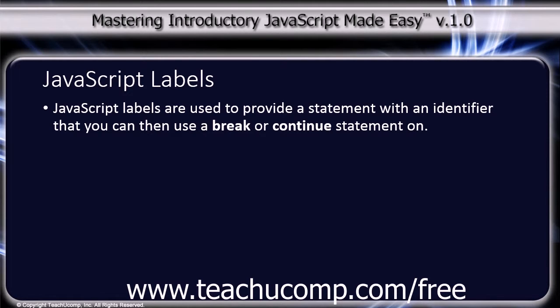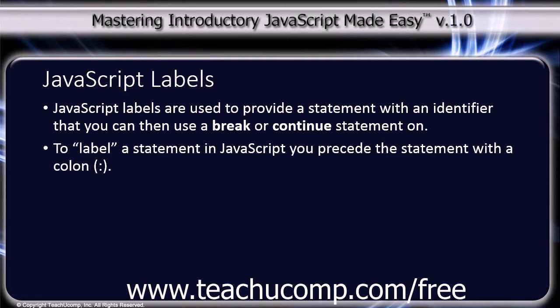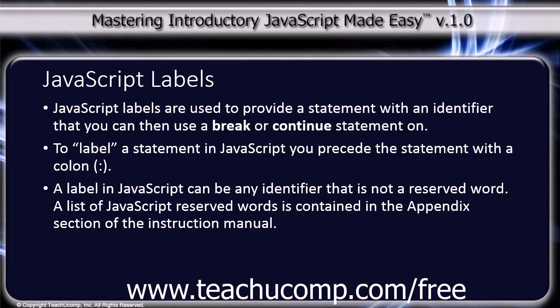JavaScript labels are used to provide a statement with an identifier that you can then use a break or continue statement on. To label a statement in JavaScript, you precede the statement with the name of the label you choose followed by a colon. A label in JavaScript can be any identifier that is not a reserved word. A list of JavaScript reserved words is contained in the appendix section of the instruction manual.